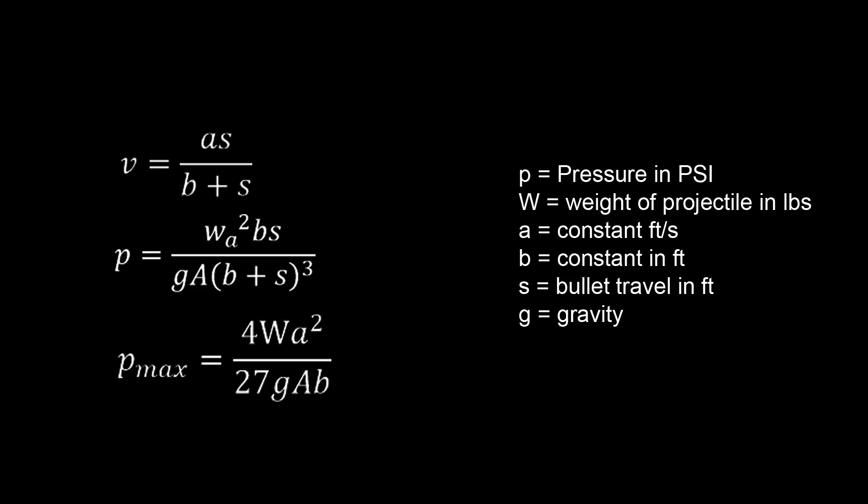Where max pressure equals four times the projectile weight multiplied by a squared all over 27 times gravity multiplied by the bore cross-sectional area multiplied by b, which again is the constant. The proof between the relationship between the three should be trivial and I am not going to go into it.